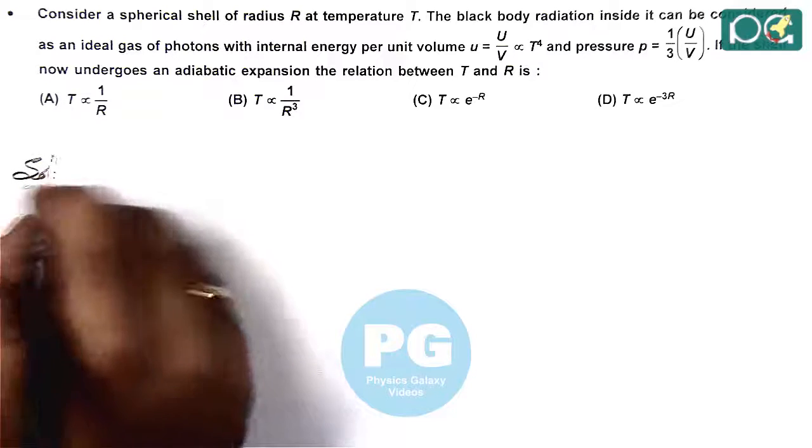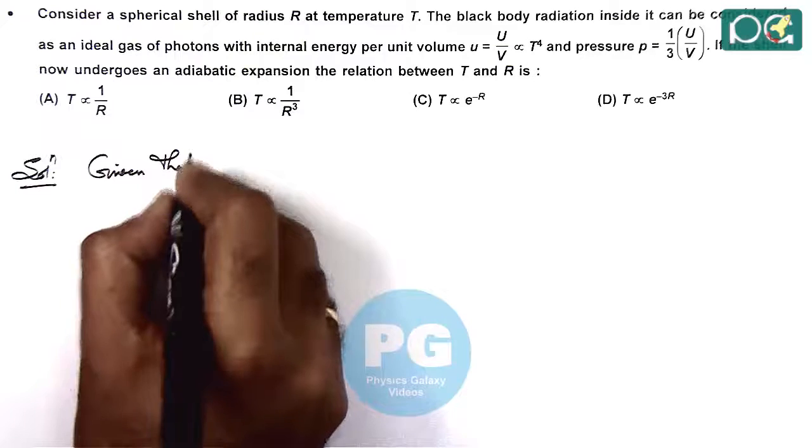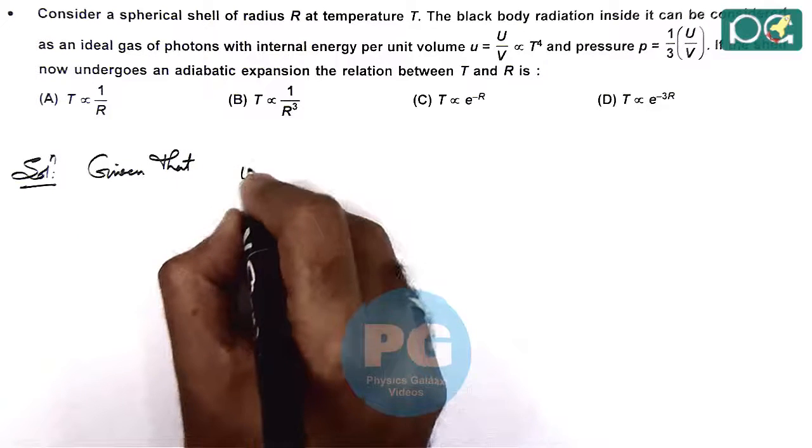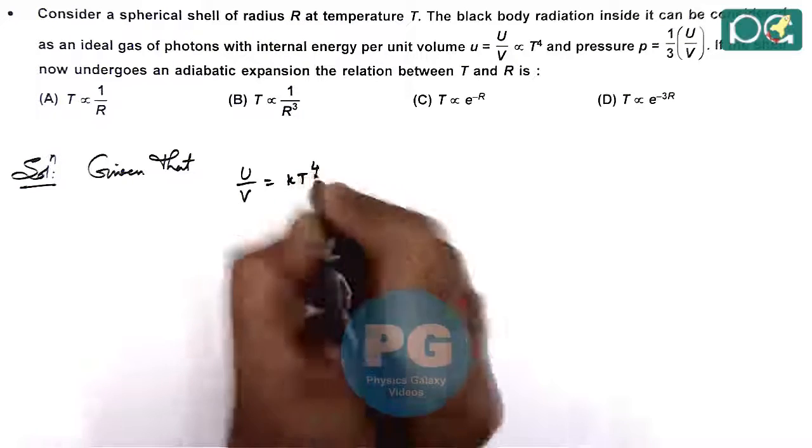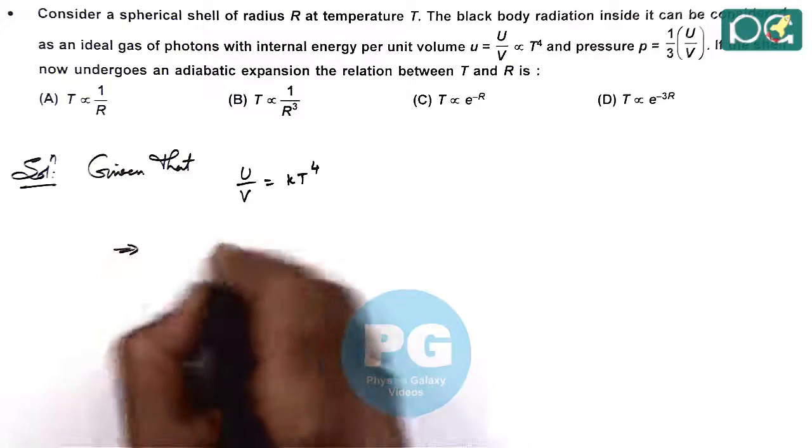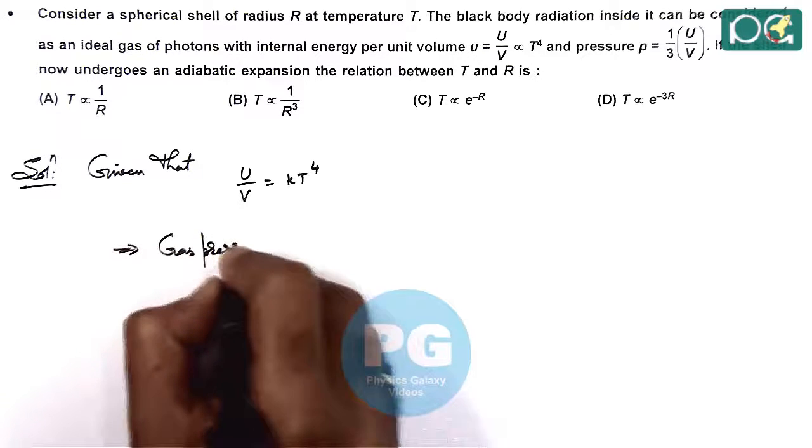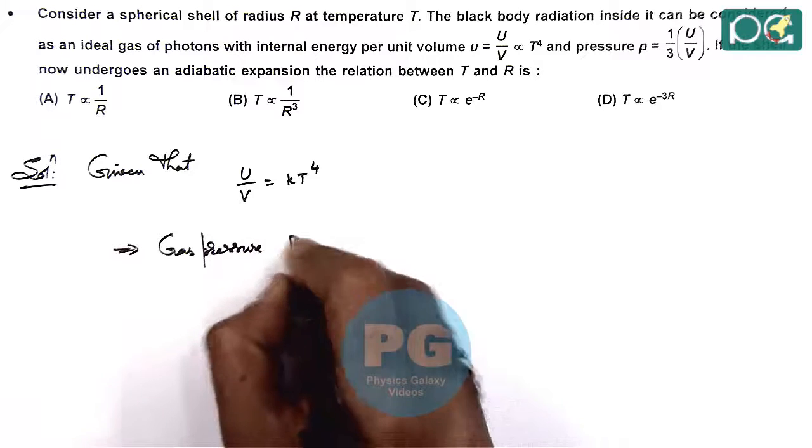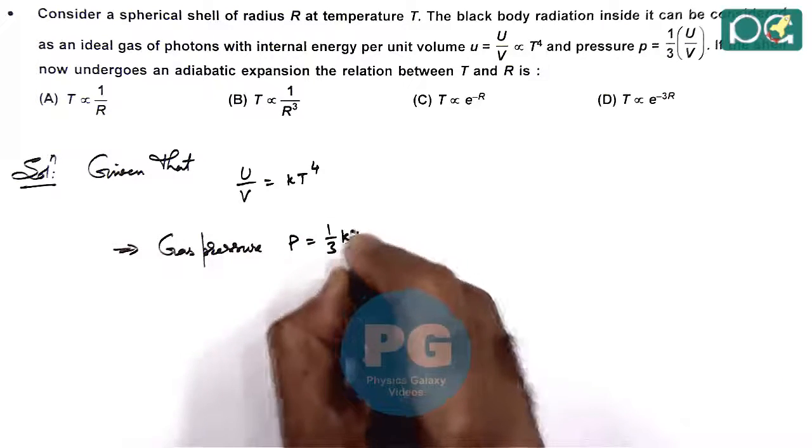It is given that U by V is K T to the power 4, because U by V is proportional to T to the power 4. So the gas pressure can be given as 1 by 3 U by V, which is 1 by 3 K T to the power 4.